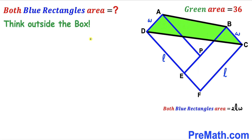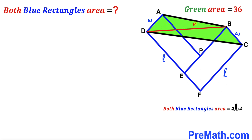We are going to think outside the box to make our job simpler. We will connect points B and D, which gives us two triangles. Let's focus on triangle ADB and assume its area is uppercase A. We know the total green area is 36, so the remaining area for triangle BCD is going to be 36 minus A.